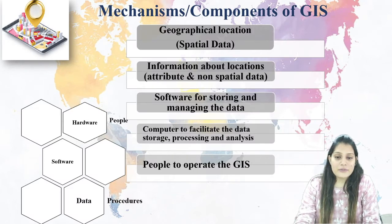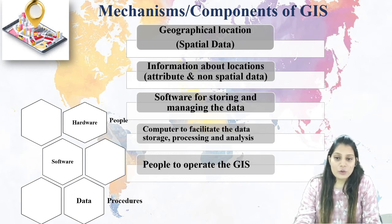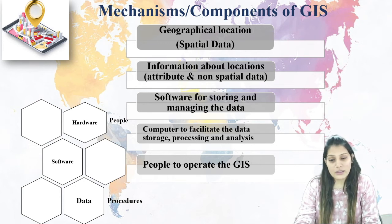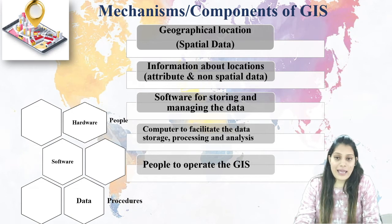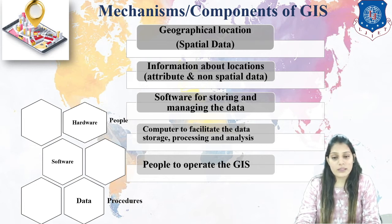The main thing next is the components of GIS. Components are: software, hardware, people who know this, data, and procedures. You require geographic data — that is spatial data — information about the location you are using, both spatial and non-spatial data. Software is needed for storing and managing data. Computers facilitate data storage and processing, and people are needed to operate GIS. These are the components of GIS, and everything is required before you start working in the software.